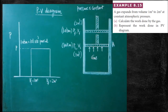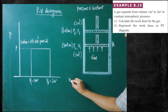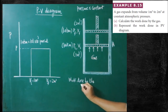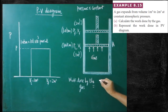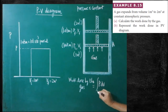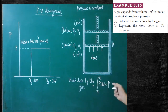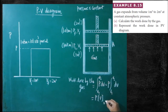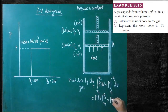Work done by the gas can be calculated by the formula. The formula is the integral of P dV from V1 to V2. Since the pressure is kept constant, the pressure can be taken outside the integral. This gives P times the integral from V1 to V2 of dV. After integrating, you get P into (V2 minus V1). So the final formula is W = P(V2 − V1).